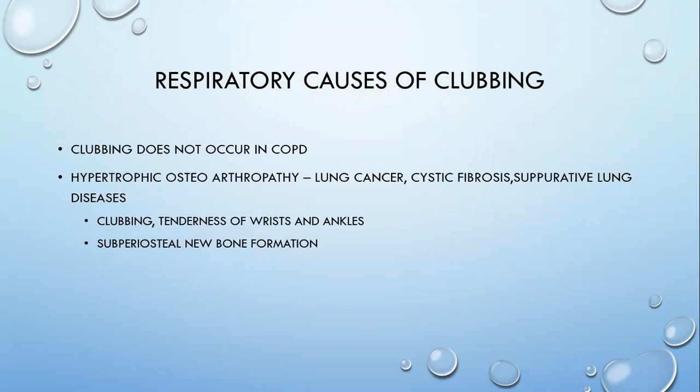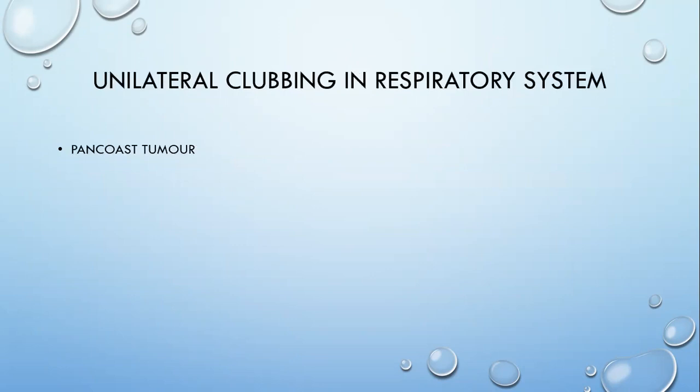Hypertrophic osteoarthropathy — apart from clubbing — will have tenderness of the wrist and ankles and periosteal new bone formation, which can be confirmed by X-ray. When a question is asked about clubbing, the next question typically covers differential clubbing, unilateral clubbing, and unidigital clubbing. Unidigital clubbing has local causes such as local trauma or local AV malformation. Unilateral clubbing can occur in hemiplegia. In respiratory system specifically, a Pancoast tumor can cause unilateral clubbing due to unilateral obstruction of the SVC.